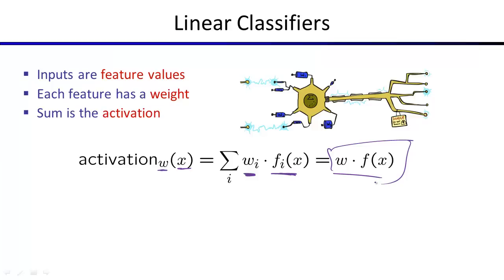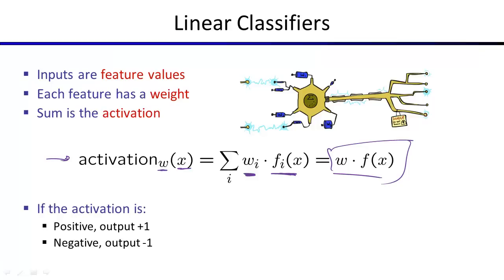In the binary case, we threshold the activation. The simplest form sets the threshold at zero: if the dot product is positive, predict +1 (spam); if negative, predict -1 (ham). To shift the threshold, you can add a bias feature — a special component of the feature vector always set to 1, whose weight effectively redefines the threshold. This bias feature lets you get intercept terms in your linear equation.